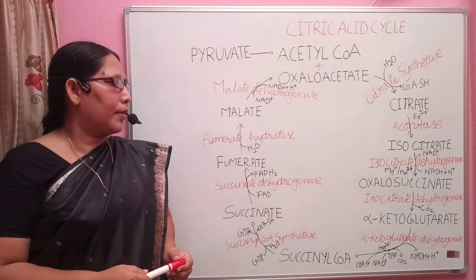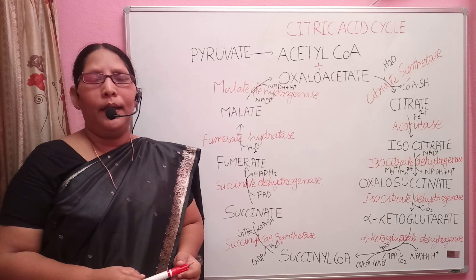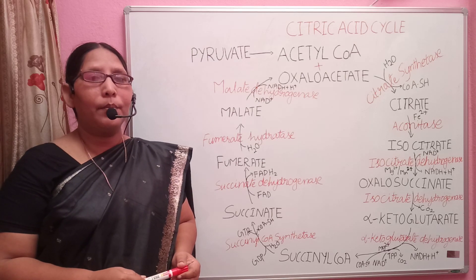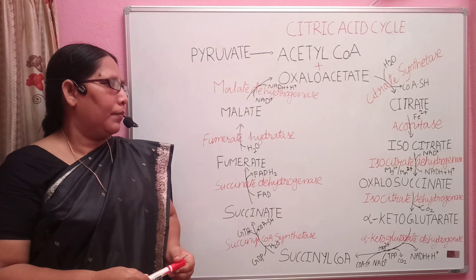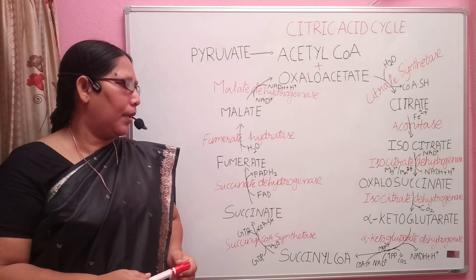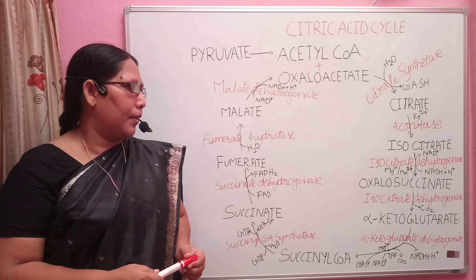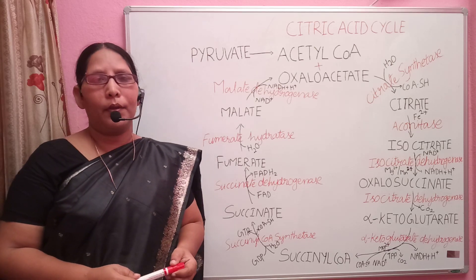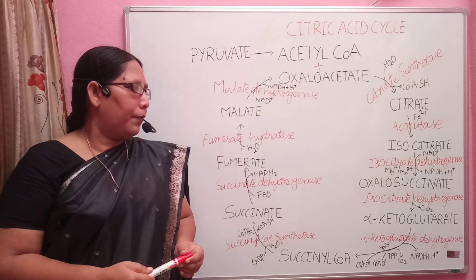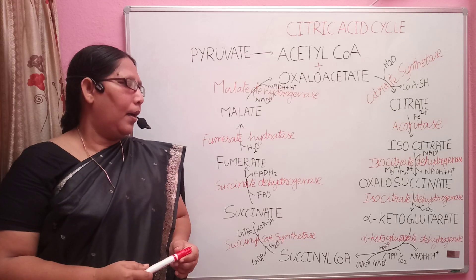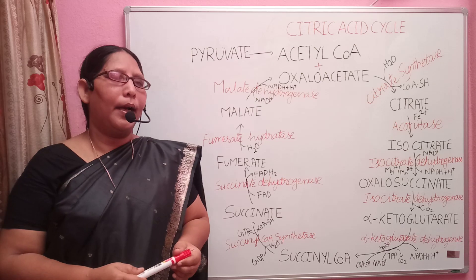Isocitrate forms oxalosuccinate in the presence of isocitrate dehydrogenase. This requires manganese ions or magnesium ions, and there is a reduction of NAD+ to NADH. Oxalosuccinate then produces alpha-ketoglutarate, also in the presence of isocitrate dehydrogenase, with removal of carbon dioxide, a process known as decarboxylation. Arsenite acts as an inhibitor of the isocitrate dehydrogenase enzyme, causing accumulation of alpha-ketoglutarate.